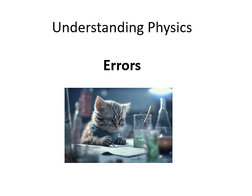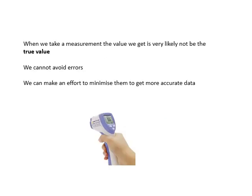Understanding physics. In this video I'm going to talk about errors, different types of error. When we take a measurement, the value we get is very likely not to be the true value, the actual value. We cannot avoid errors.